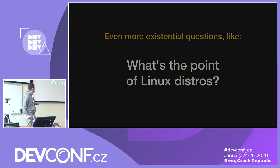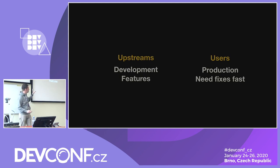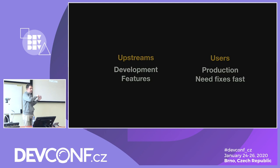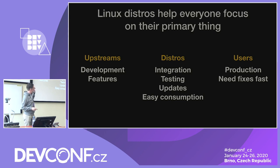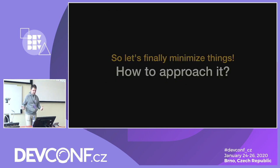Even more existential question: what's the point of Linux distros? Is Fedora even the right place to do this? Upstreams develop software and features; users need fixes fast in production. Users may pressure upstream to fix a CVE, but upstream doesn't have time because they're developing. That's where distros come in — they integrate things, test things, make software easily consumable and updatable, and basically make everyone's life better. So they can focus on development, and users can focus on running things. You can have various distros for various target groups — communities like Fedora, enterprises like Red Hat. So Fedora is the right place.